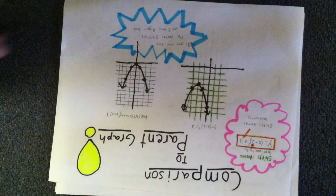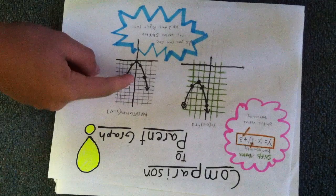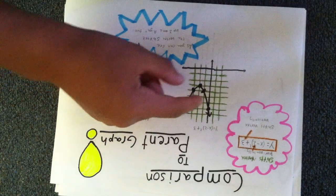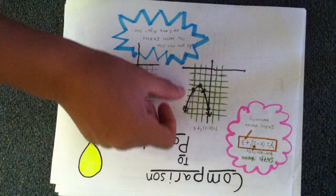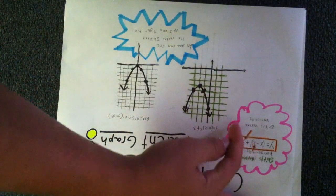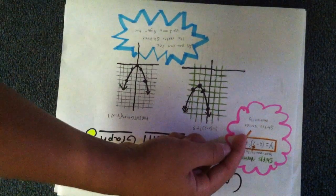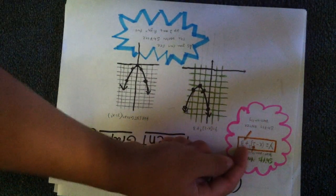This graph right here is exactly the same as the parent graph, except for where it's located on the axis. As you can see, it is shifted up 3 and right 2. This is displayed in the equation here.